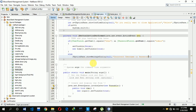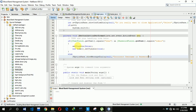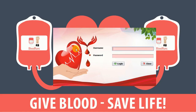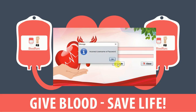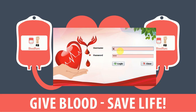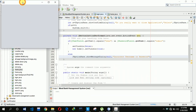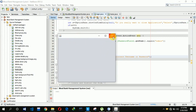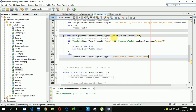Now our login part is complete. Let's run the file — it will take a few seconds. Here you can see the form. Let me first write an incorrect username and password and click login — you can see a pop-up message: 'Incorrect'. Now let me enter 'bbms' as the username and 'admin' as the password, click login, and you can see the next frame has opened — this is our home page.